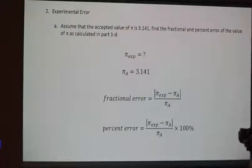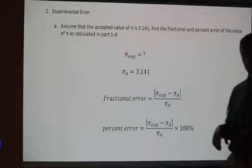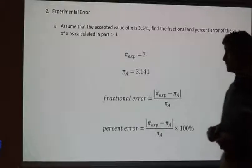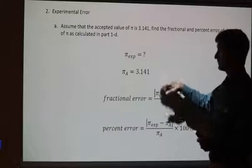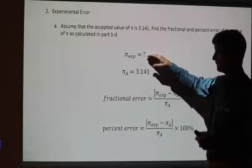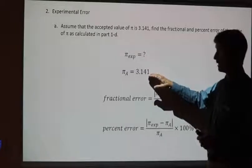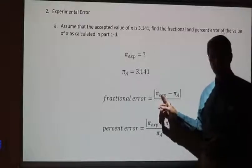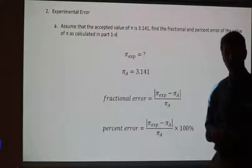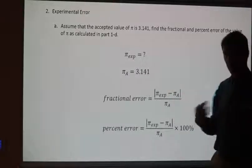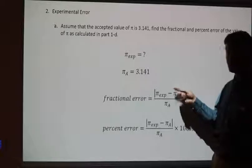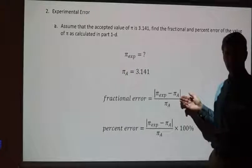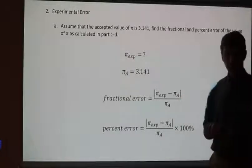Now we're going to calculate experimental error — a way of calculating how close your experimental measurements were to what the actual measurements should be. We can only do this when we have an accepted value. Pi is easy. To calculate fractional error: take your experimental value, subtract the accepted value, take the absolute value of the difference, then divide by the accepted. Fractional error is really the same as percent error — we just don't multiply by 100% at the end.